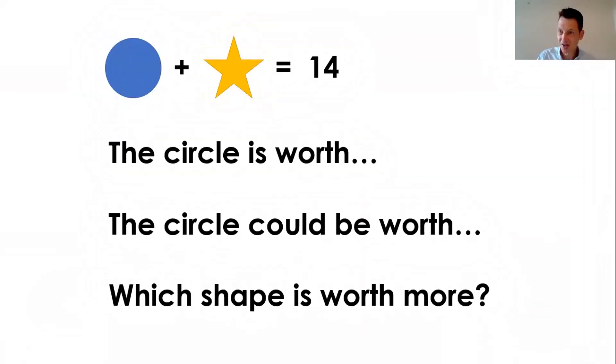We look at a circle plus a star equals 14. I want you to say what the circle could be worth and which shape is worth more. We want the children to get to essentially that we don't know the value of the circle because there are two unknowns. We've got different things that it could be worth, and we don't know which has the higher value. The children might just think the circle is more because it's bigger.